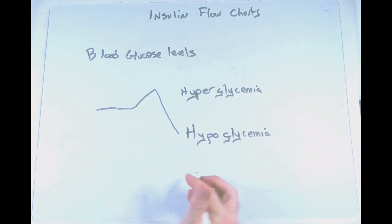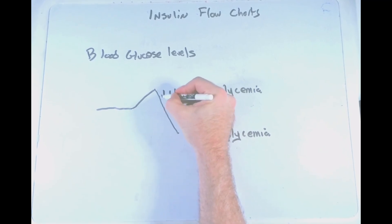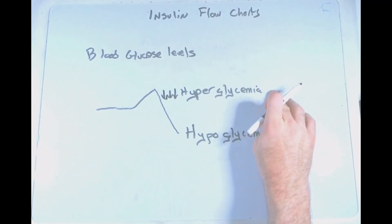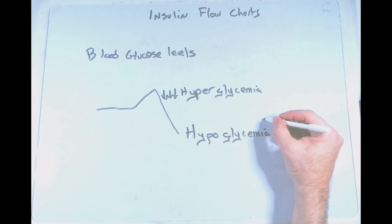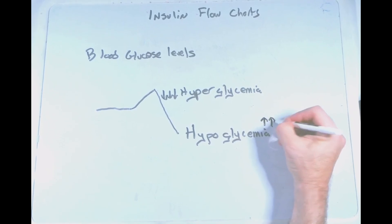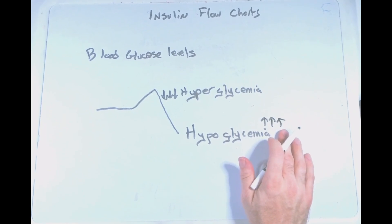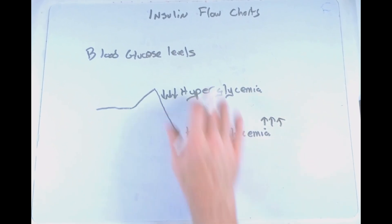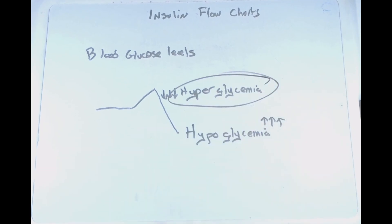In the process of homeostasis, if we have hyperglycemia, we're going to have factors that try to drive blood glucose levels down. If we have hypoglycemia, we're going to have a series of steps that try to drive blood glucose levels back up. We're going to look at insulin as an example of a flowchart — as an example of a homeostatic process that occurs when we're in a hyperglycemia situation.